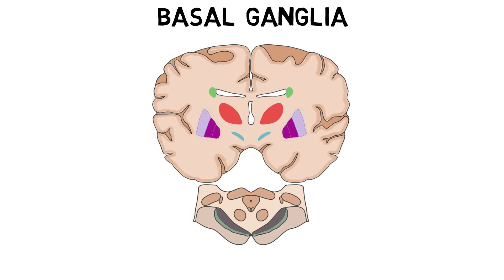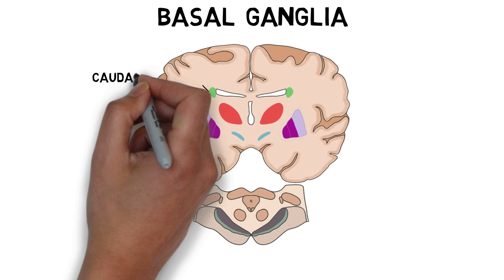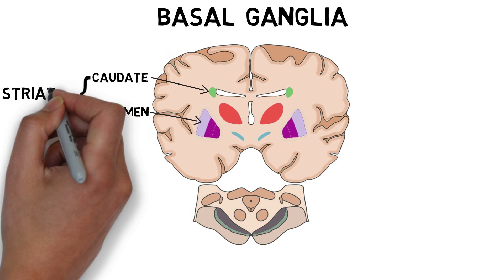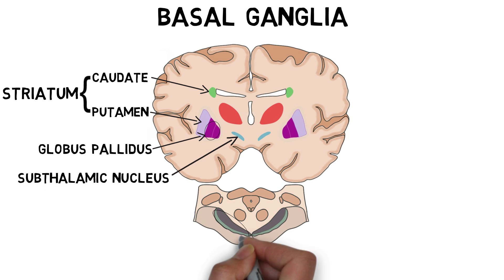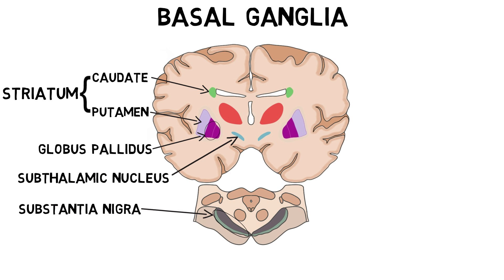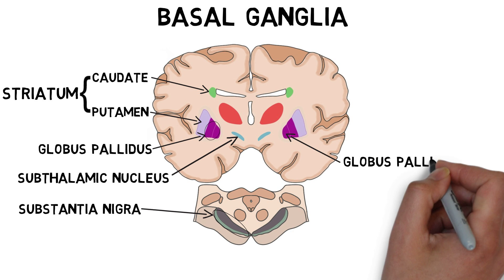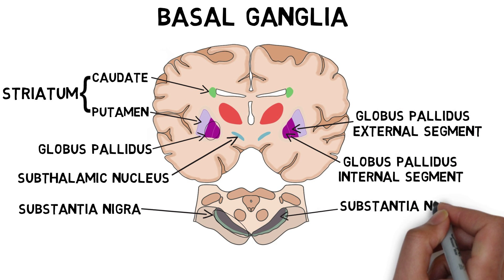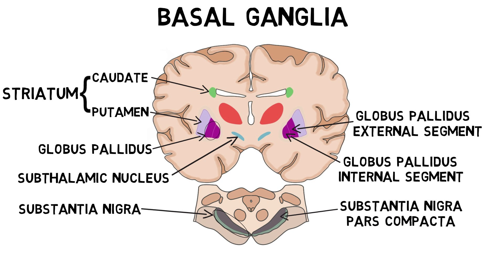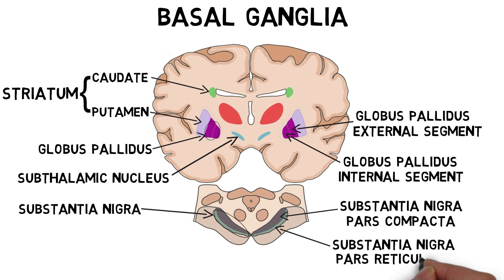The basal ganglia are a group of structures that generally include the caudate and putamen, which are collectively known as the striatum, the globus pallidus, subthalamic nucleus, and substantia nigra. The globus pallidus is further divided into internal and external segments, and the substantia nigra is divided into the substantia nigra pars compacta and substantia nigra pars reticulata.